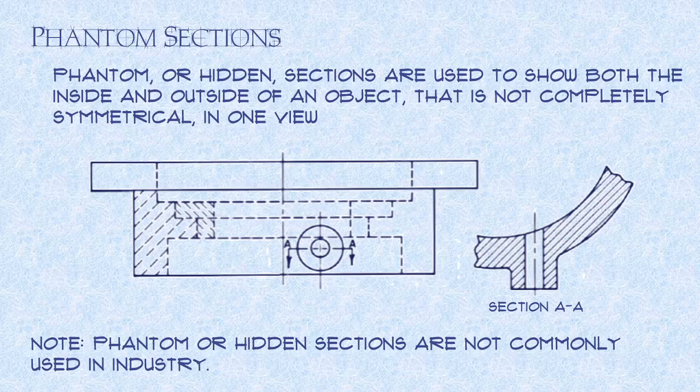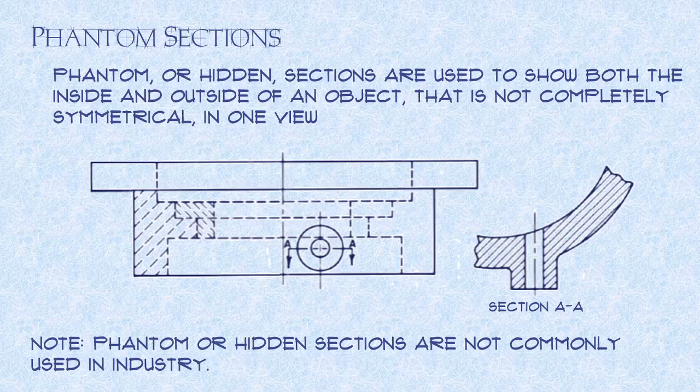Phantom sections. This is not one that I had on our list originally, but a phantom section or hidden sections are used to show both the inside and outside an object that is not completely symmetrical in one view. So we're trying to show everything in one view. So here it is, my front view, and I've just done, hey, I'm going to do a section view line coming through here, my viewing plane line coming through here, section AA, and we're just showing this detail looking down on it. Phantom or hidden sections are not commonly used in industry, as you'll see at the note at the bottom. Some places use them, but...